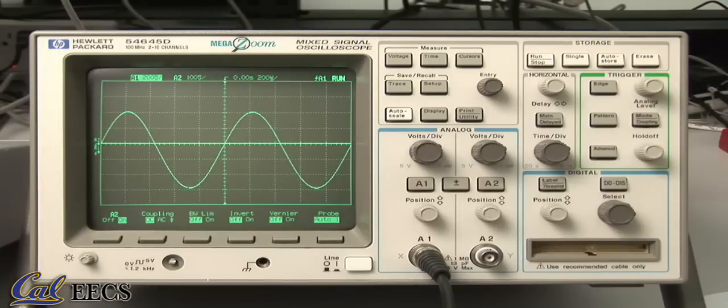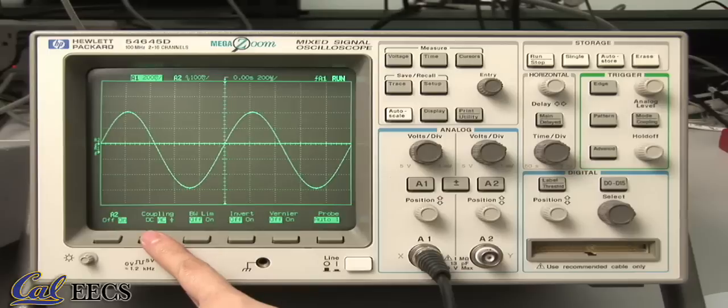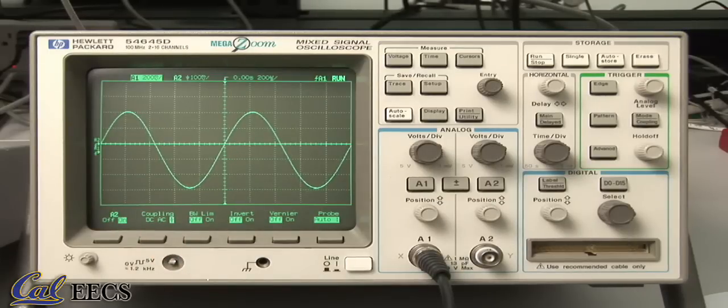Sometimes, you may want to see a small signal riding on a large DC voltage. In that case, you can switch the input to AC coupling. Your scope also has a ground input setting, which lets you see where zero volts is on the screen.